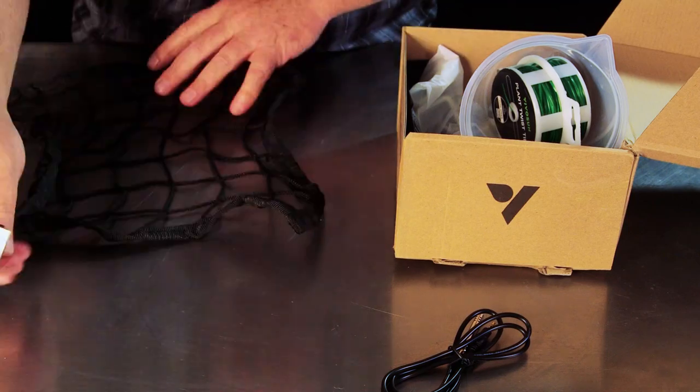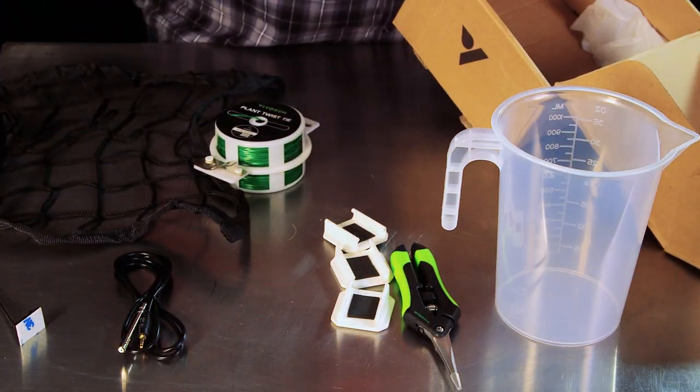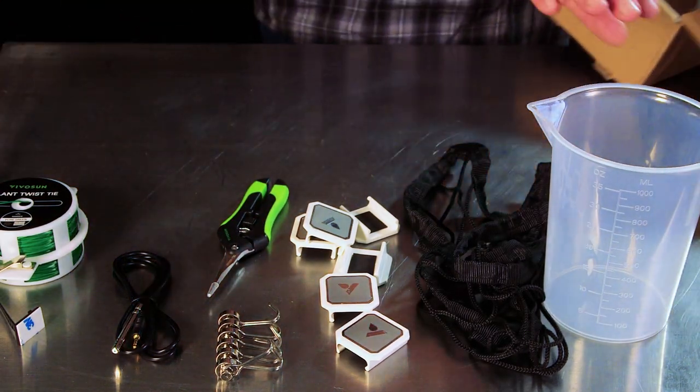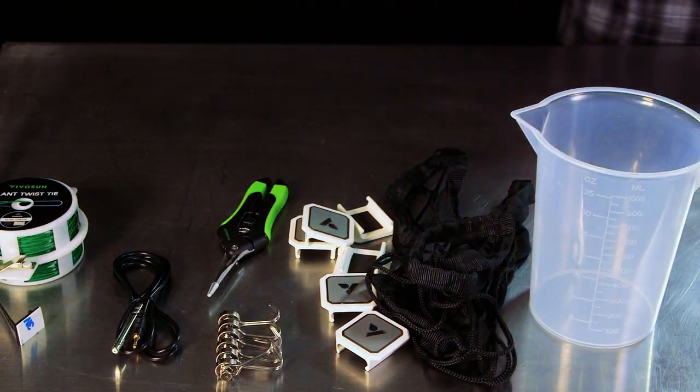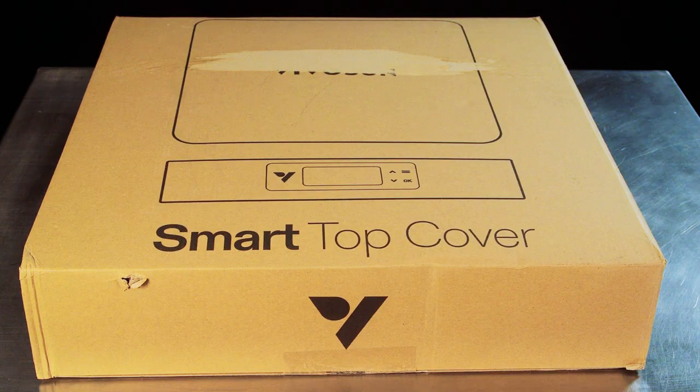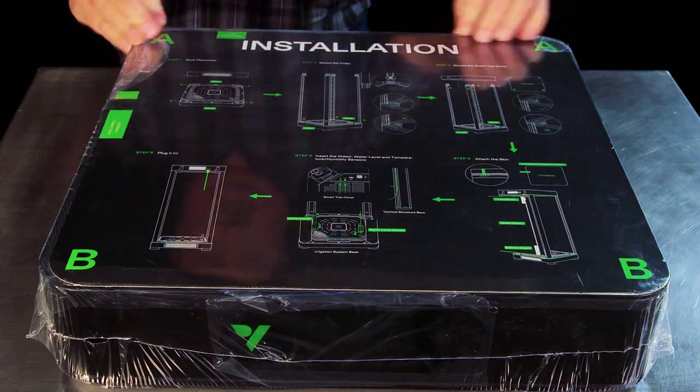The accessories box includes some clippers, a little scrog net, some twist ties to tie the plants up and do low stress training, sensors for heat and temperature, little hooks to hang the net, and a measuring cup for adding nutrients.